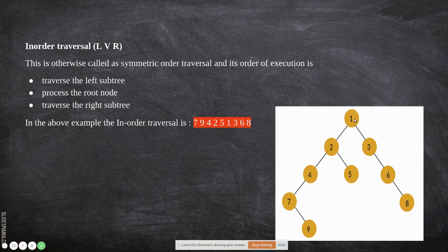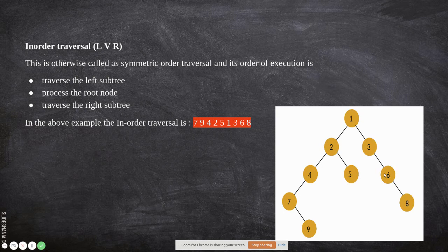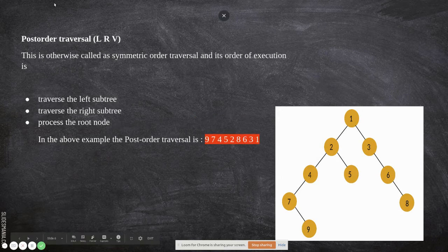After printing 1, we move to the right subtree. Since the parent has already been printed, we move to print its right child. When a node has no left child, the parent is printed immediately, then its right child. The final node in this subtree is printed last. That completes the in-order traversal.